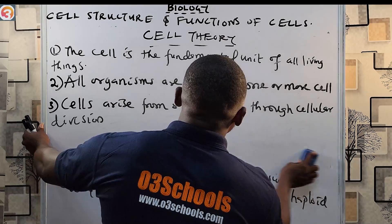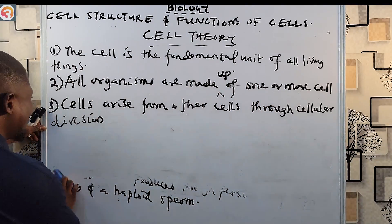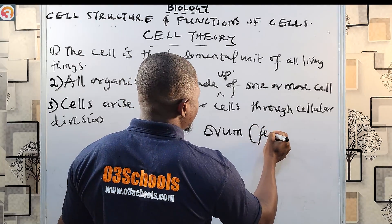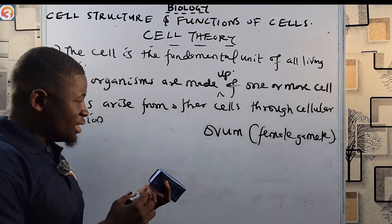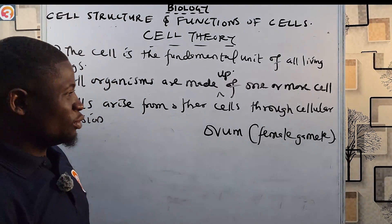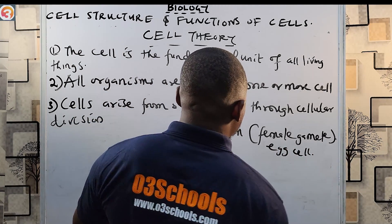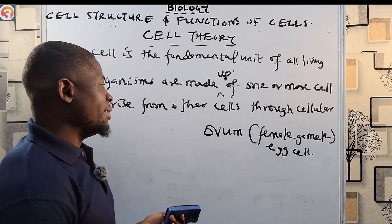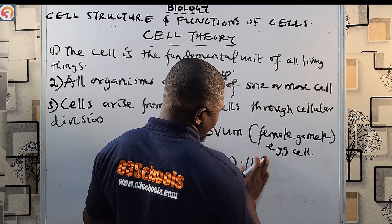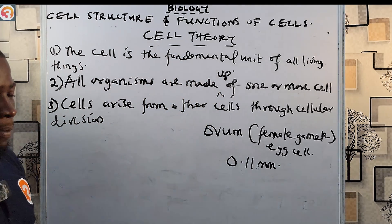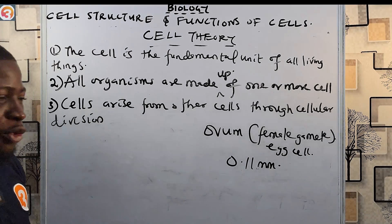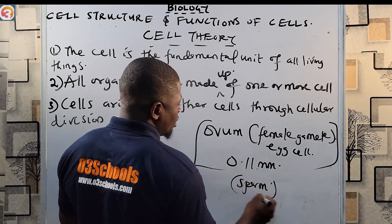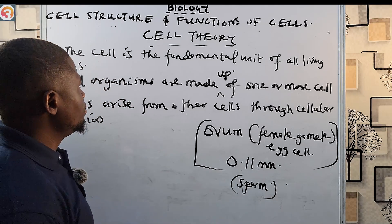You should also know that the largest single cell in humans is the ovum — the female gamete, which is the egg cell released every month. It has a diameter of about 0.11 millimeters. The smallest single cell in humans is the sperm — the male gamete.